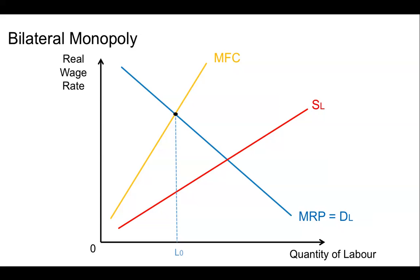Now in order to get that many workers, they look at the supply of labor curve — the minimum price paid to entice workers into that market — and they will therefore pay the wage W0. So this model as it looks here is what would happen if we had the monopsony diagram. And if we didn't have any other influences, the monopsonist would pay W0 and hire L0.